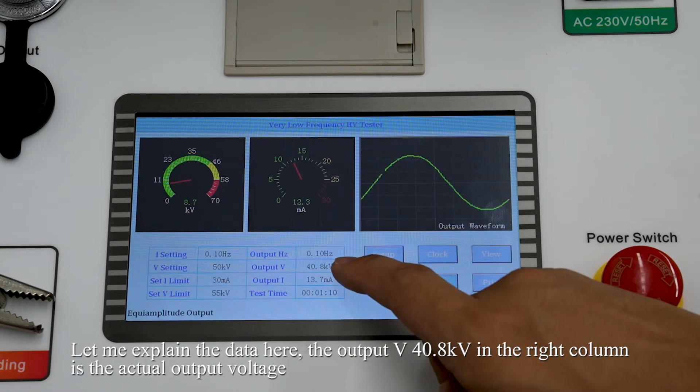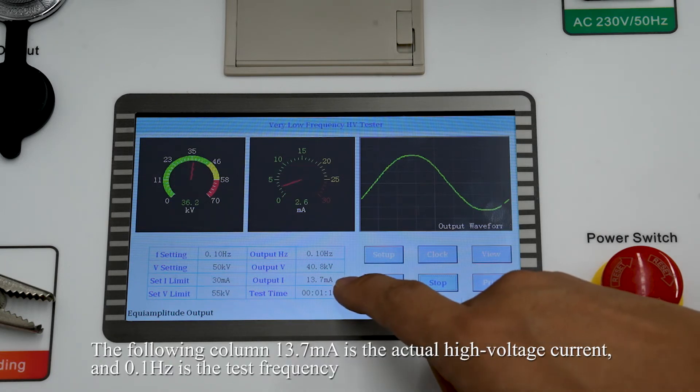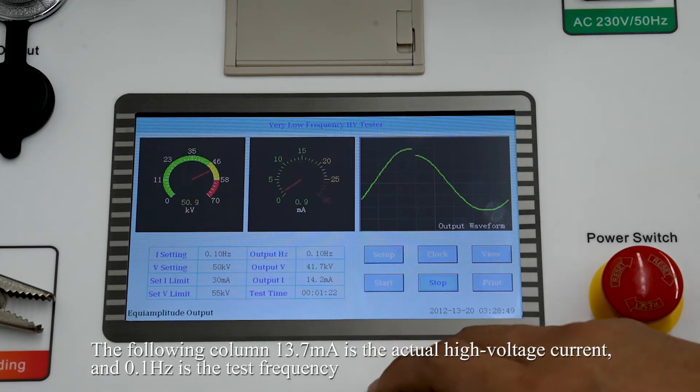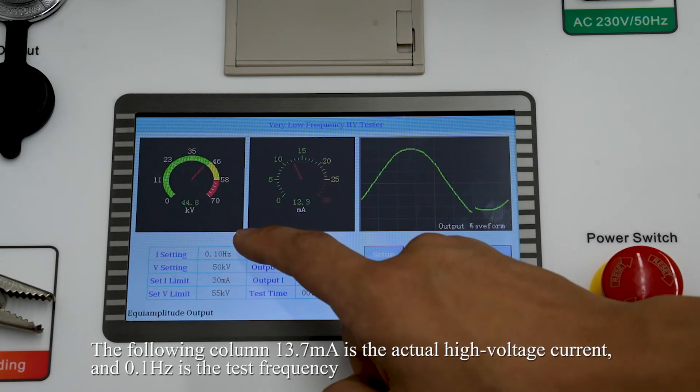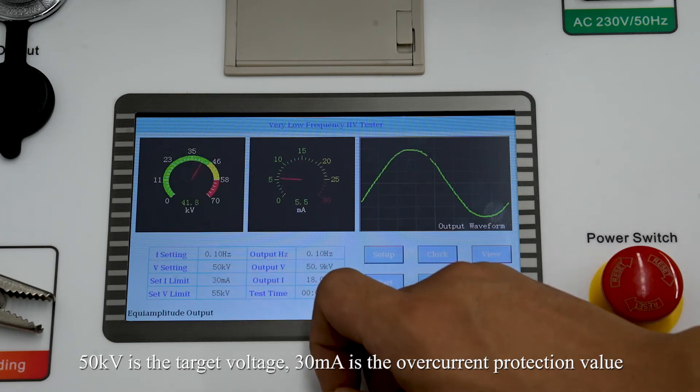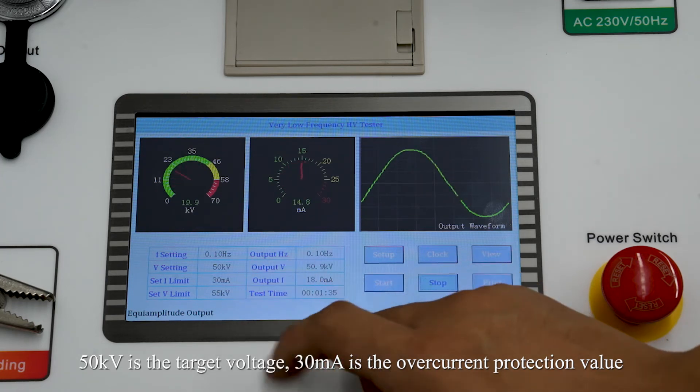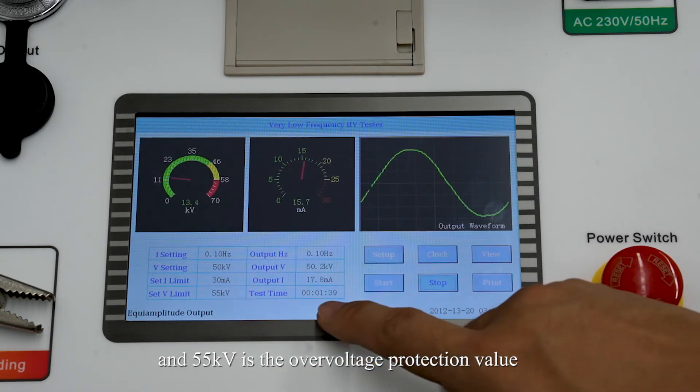Let's explain the data here. The output V 30.8 kV in the right column is the actual output voltage. The left column 13.7 mA is the actual high-voltage current. And 0.1 Hz is the test frequency. 50 kV is the target voltage. 30 mA is the over-current protection value. And 55 kV is the over-voltage protection value.